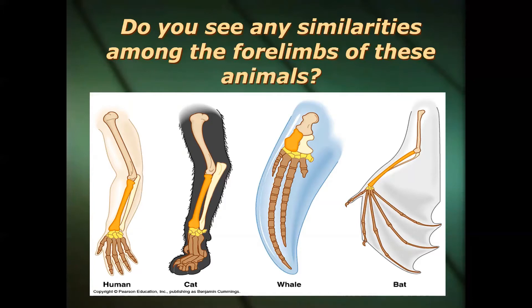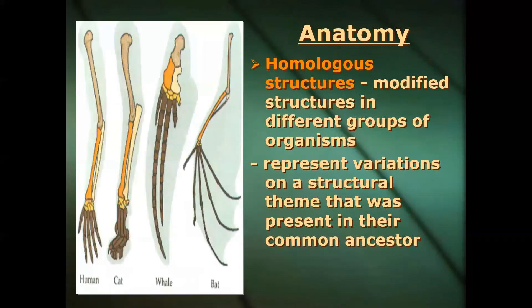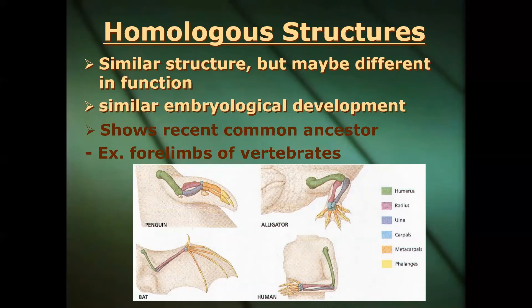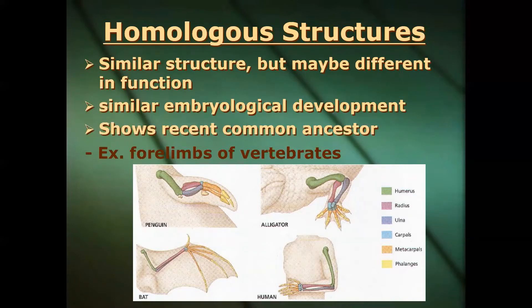This is what we call homologous structures — modified structures in different groups of organisms where they have the same bones, just slightly different in size or shape. They represent variation on a structural theme present in a very recent common ancestor. To sum it up: homologous structures are similar in structure but different in function. They show similar embryological development, and most importantly, they indicate a recent common ancestor — perhaps millions of years ago, when they all radiated out from that common ancestor.